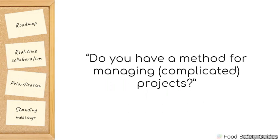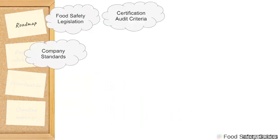Do you have a method for managing complicated food safety projects? If you feel you do, you may find some new perspective here. If you don't, I hope you find some inspiration. When we think about a food safety system, we're obviously thinking about making safe food, but there are also regulatory requirements — the food safety code, third-party audit certification criteria, and company standards. All these things are kind of hovering over you. How do we get organized and attack them in a methodical way?